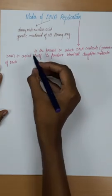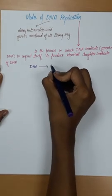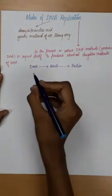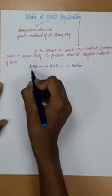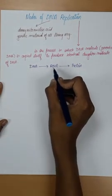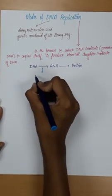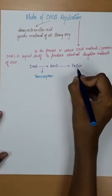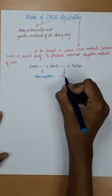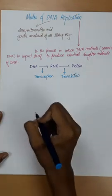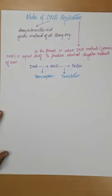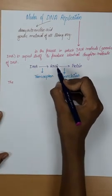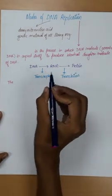The genetic information flows from DNA to RNA, then RNA to protein. The base sequence information present in DNA is copied to an RNA molecule through the process of transcription, and synthesis of protein from RNA is known as translation. This process of copying DNA to RNA and RNA to protein is known as the central dogma of molecular biology.